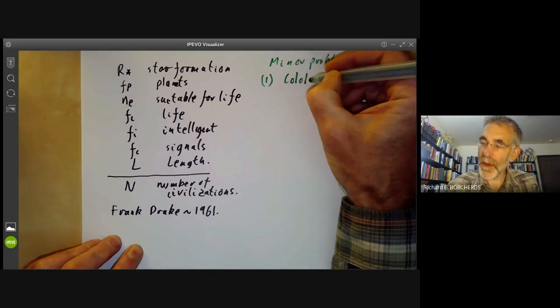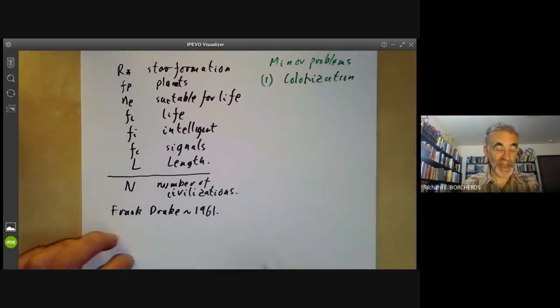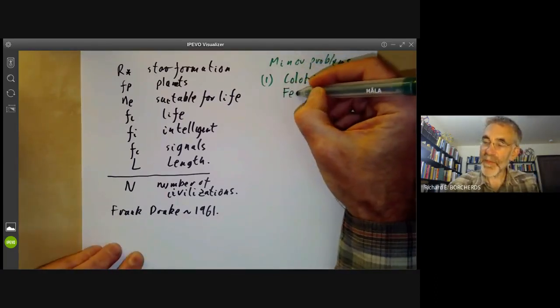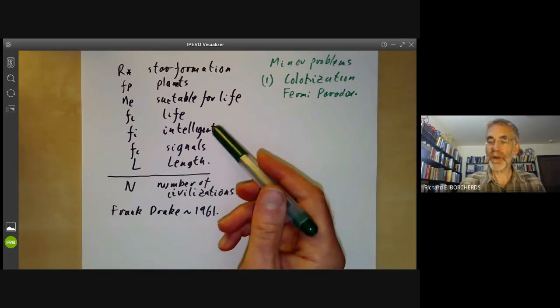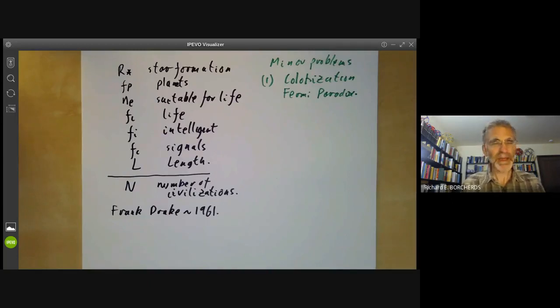Civilizations might colonize other planets, which would make it much more likely to detect them. This leads to something called the Fermi paradox. So Fermi sort of pointed out that if you have a civilization, it should be able to colonize the galaxy within maybe 100 million years or so. So if there are any such civilizations, we really ought to have seen them and we haven't. This sort of weakly suggests that it might actually be quite difficult for intelligent civilizations to develop. On the other hand, going from one star to another is enormously more difficult than most people seem to imagine.